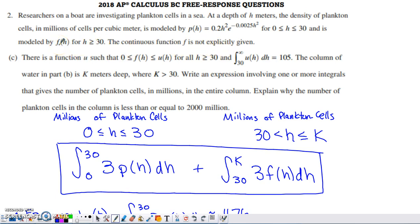We need to deal with a new density function, not explicitly given, for values of h above 30. And so we're asked to write an expression involving one or more integrals that gives the number of plankton cells in millions in the entire column.